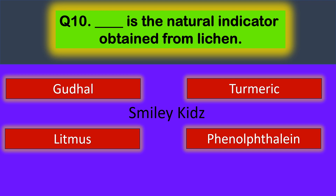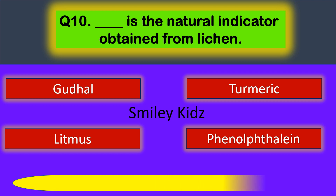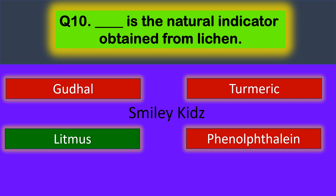Question number ten: dash is the natural indicator obtained from lichen. Your options are quotal, turmeric, litmus, and phenolphthalein. Your time starts now. The correct answer is litmus — litmus is the natural indicator obtained from lichen.